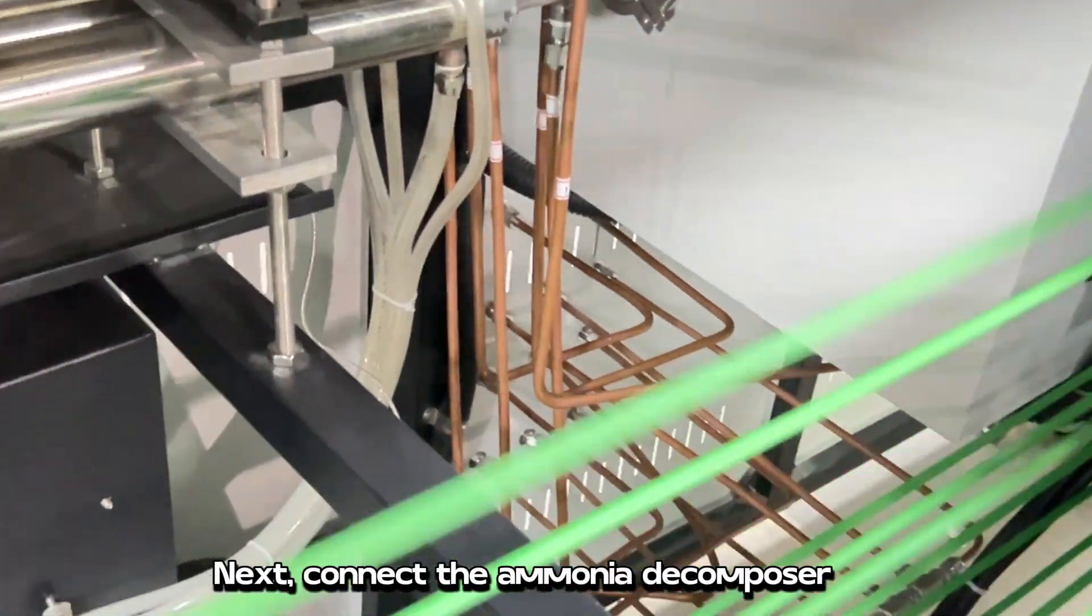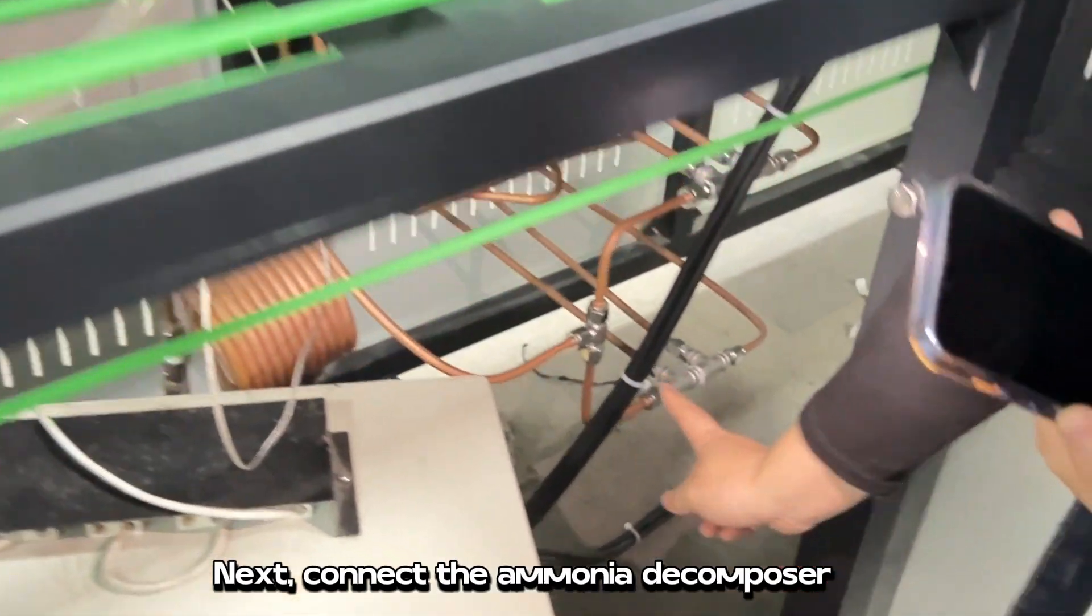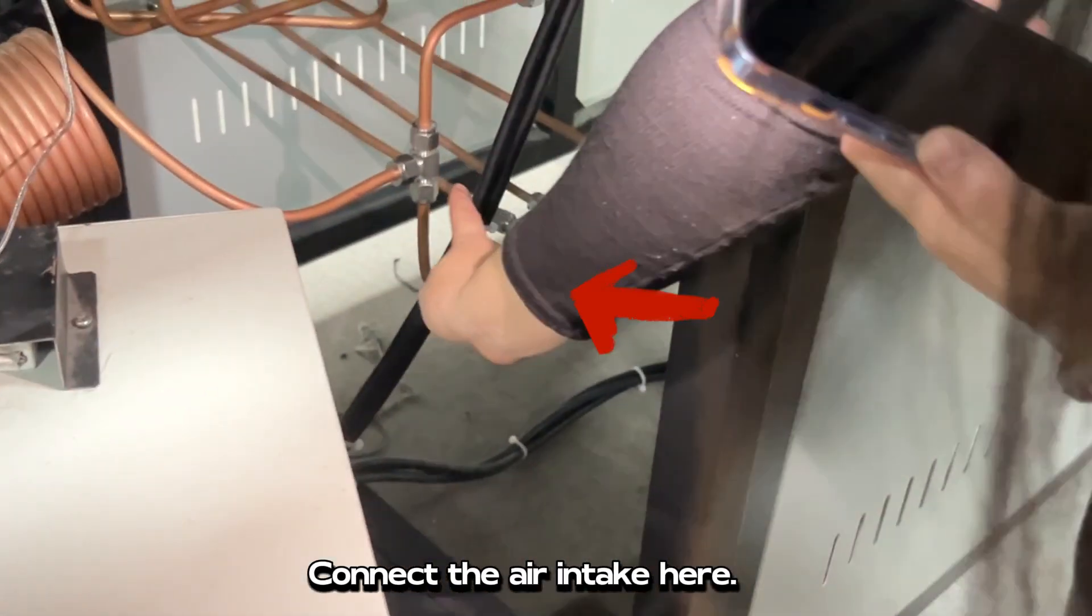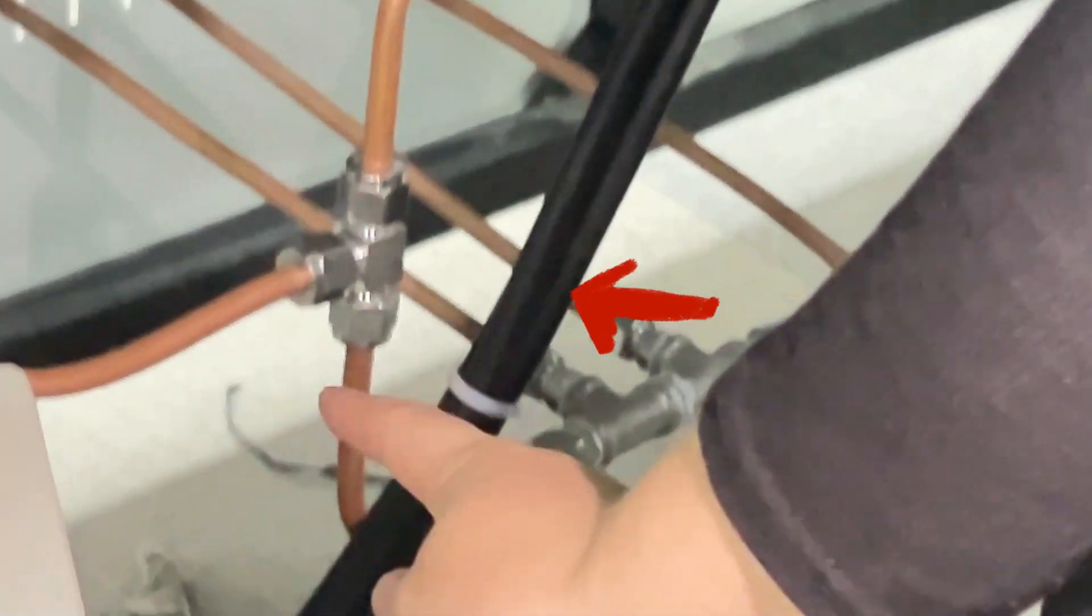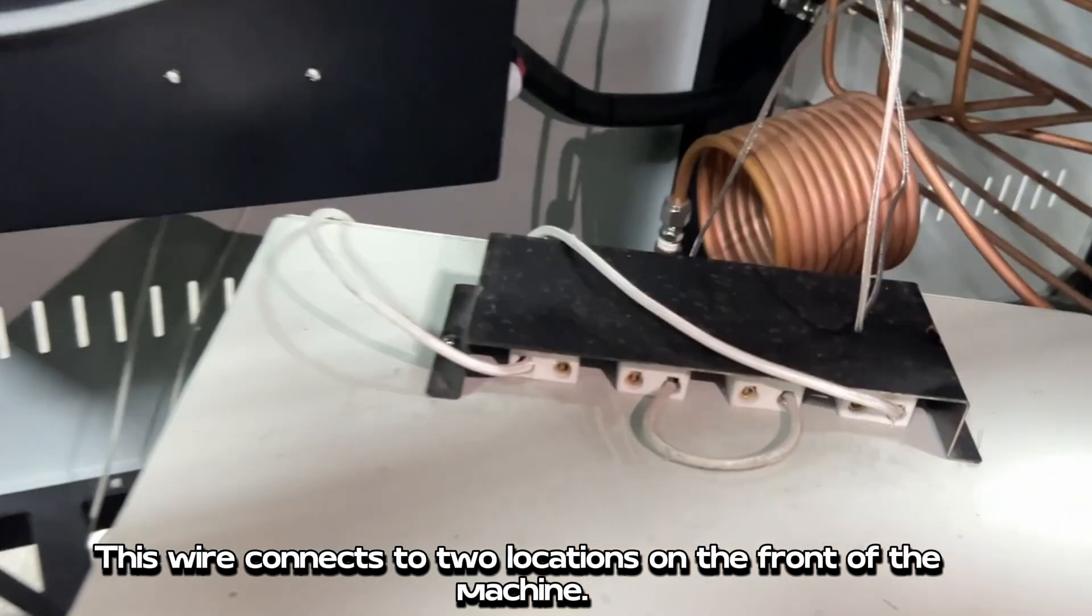Next, connect the ammonia decomposer. Connect the air intake here. Ammonia decomposer, connecting front wires and temperature probes. This wire connects to two locations on the front of the machine.